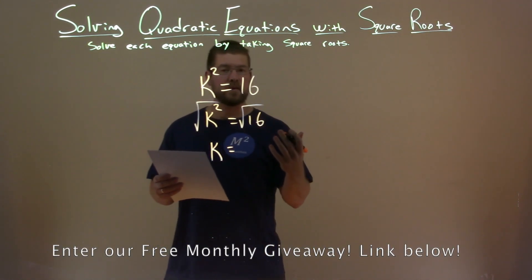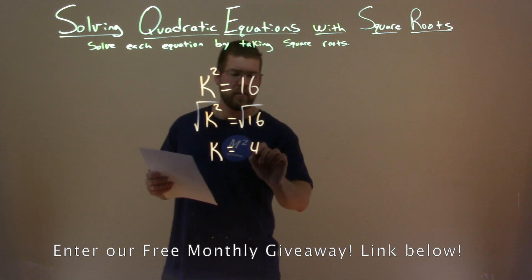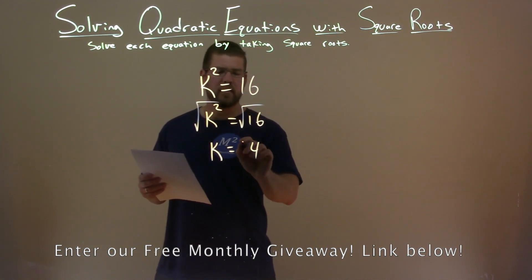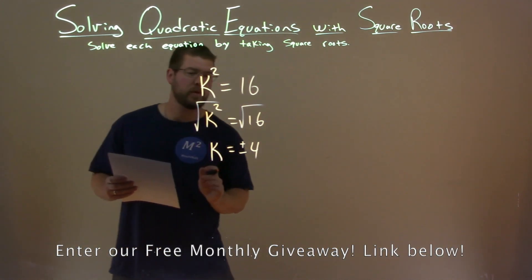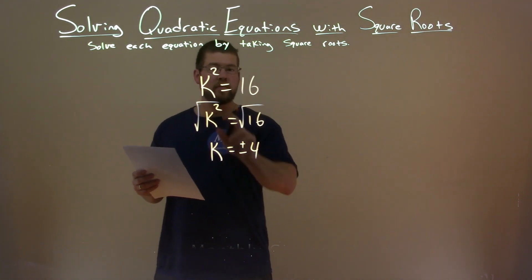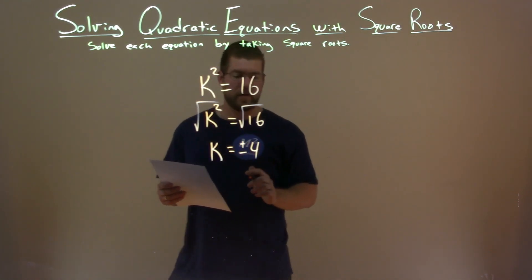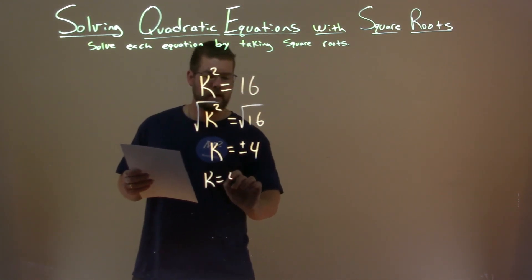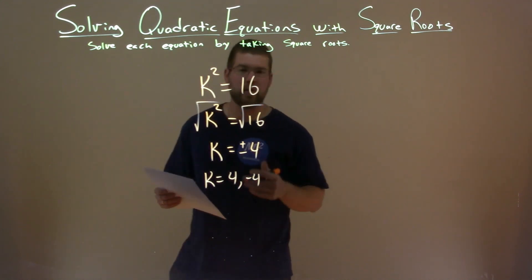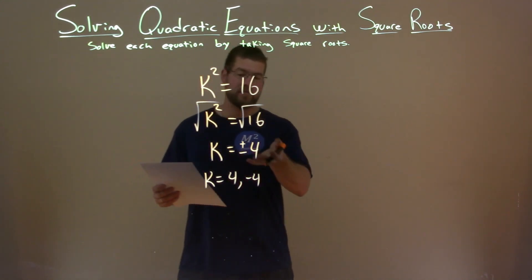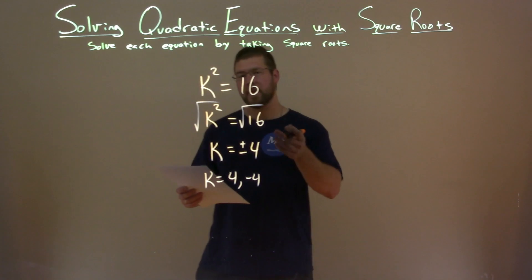The square root of 16 is 4, but we're not just done — we have to write plus or minus 4. So positive or negative 4 both would fit for k. We can write it like this: k equals 4 and negative 4. That's our final answer.